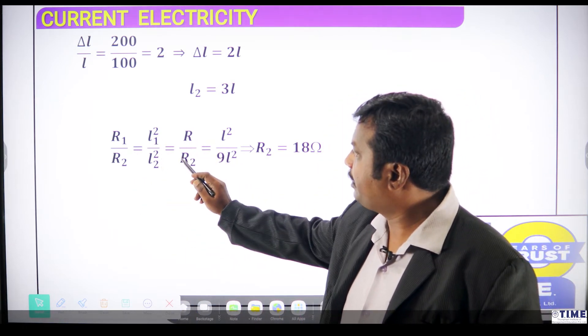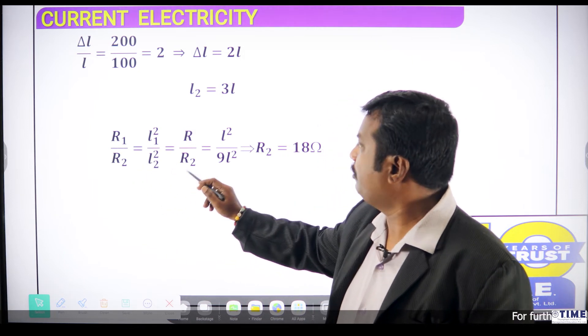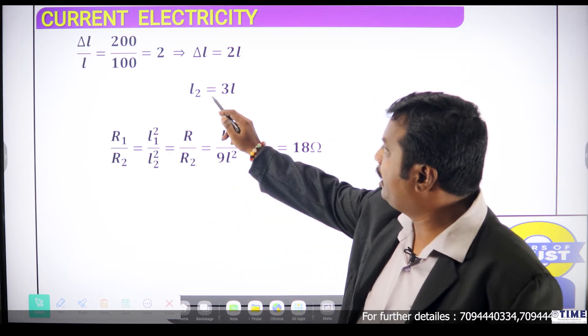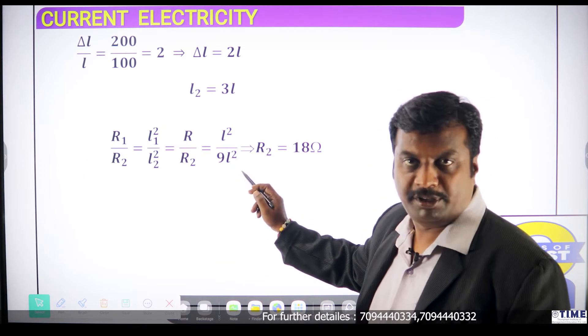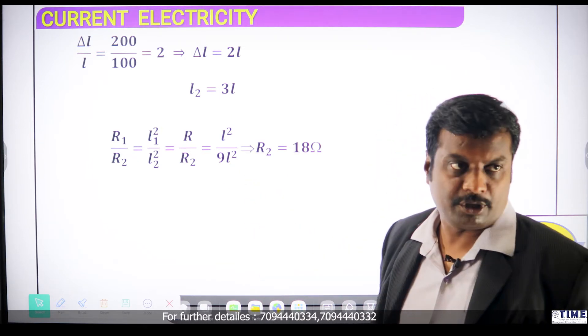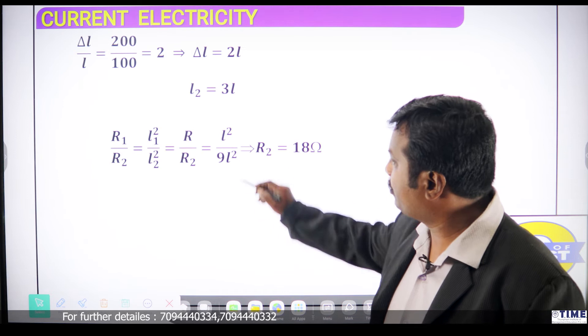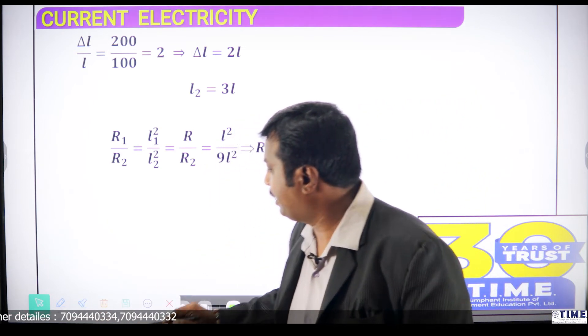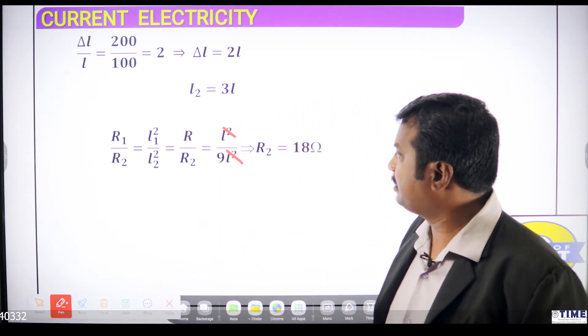What we get is R1 by R2. L1 square by L2 square. L2 value is 3L. 3L square will be 9L square. L square and L square will get cancelled.